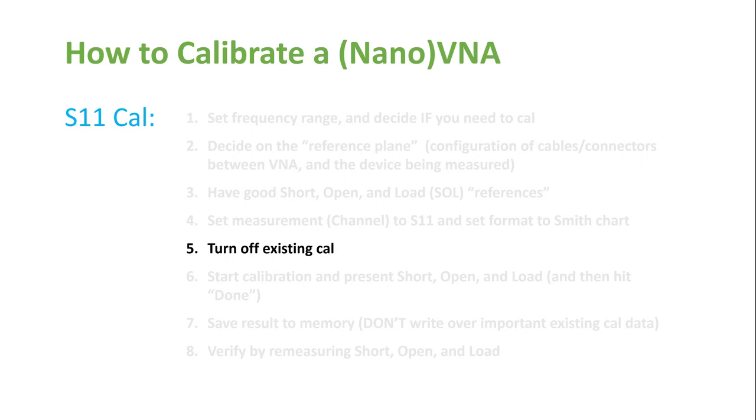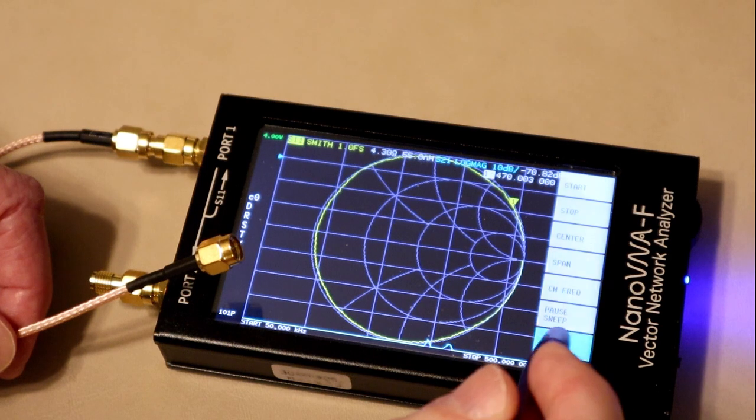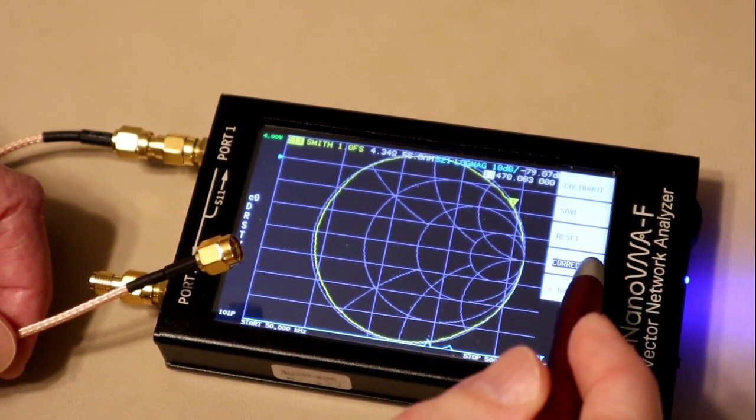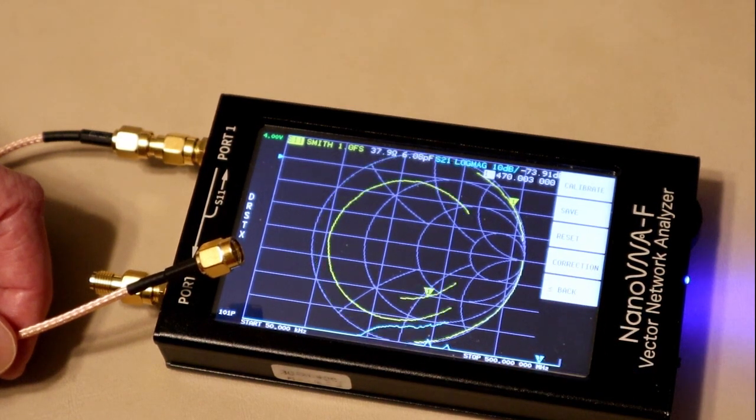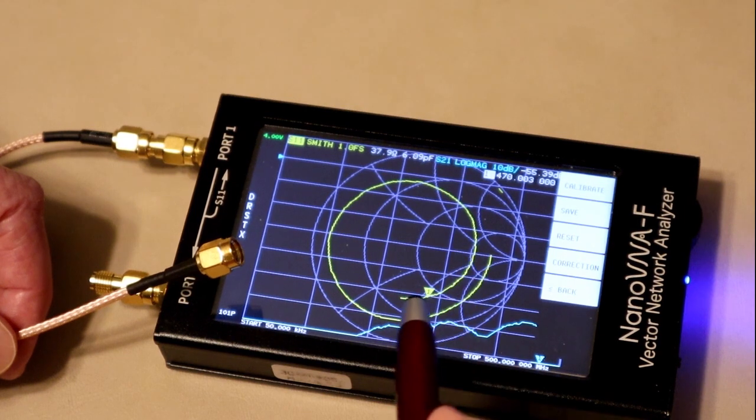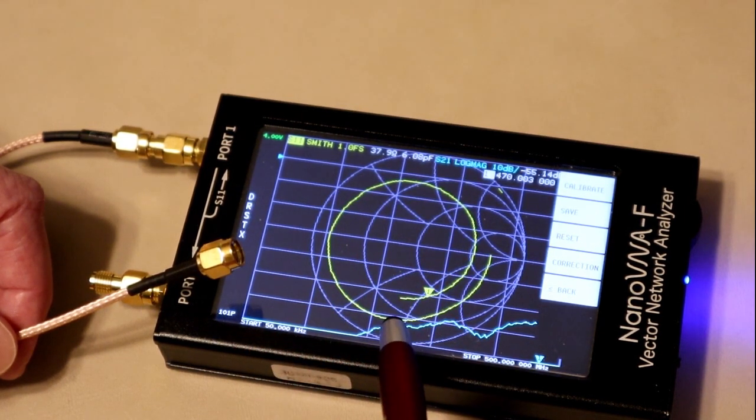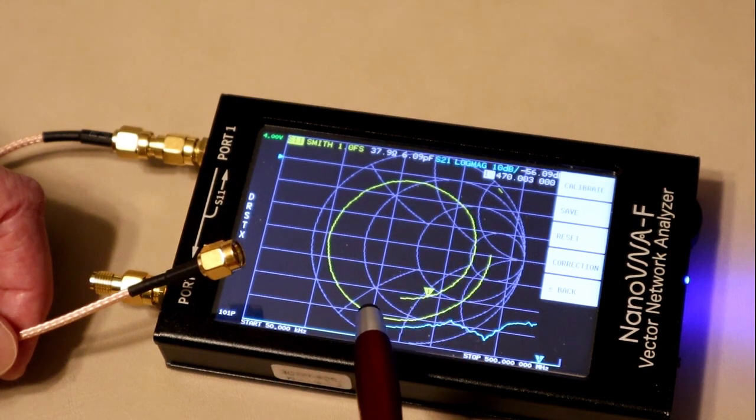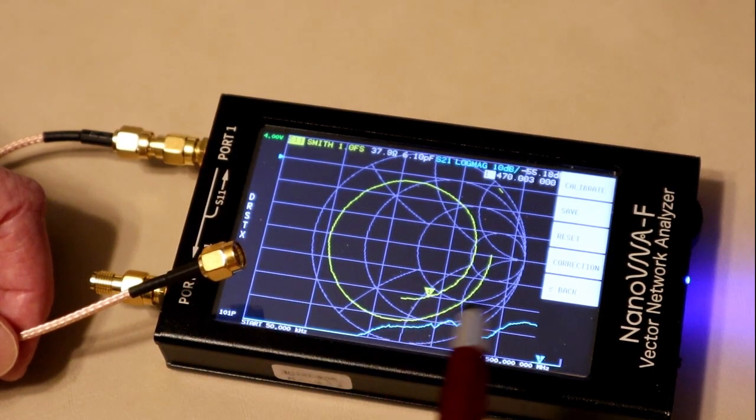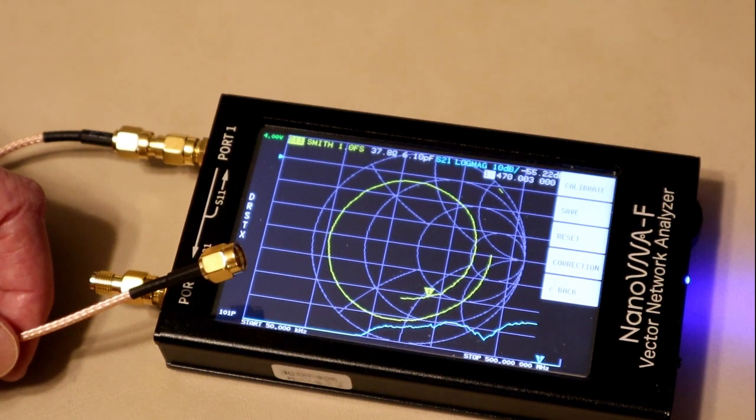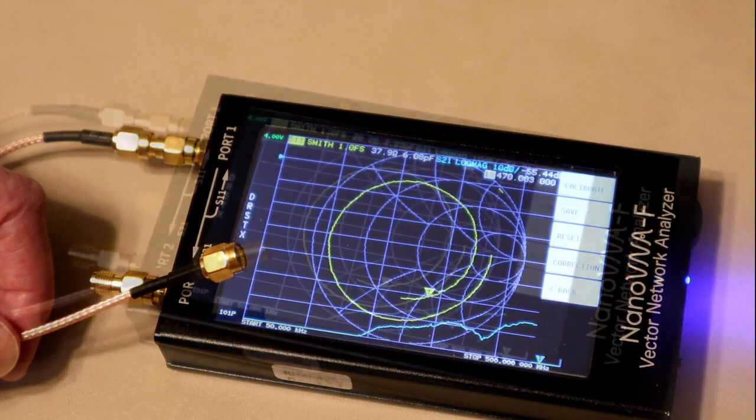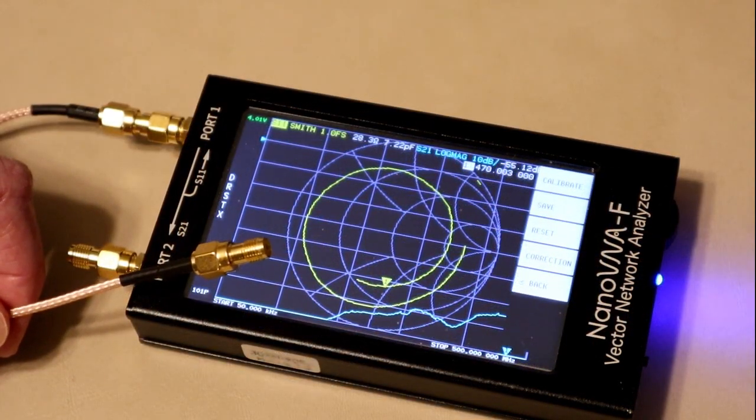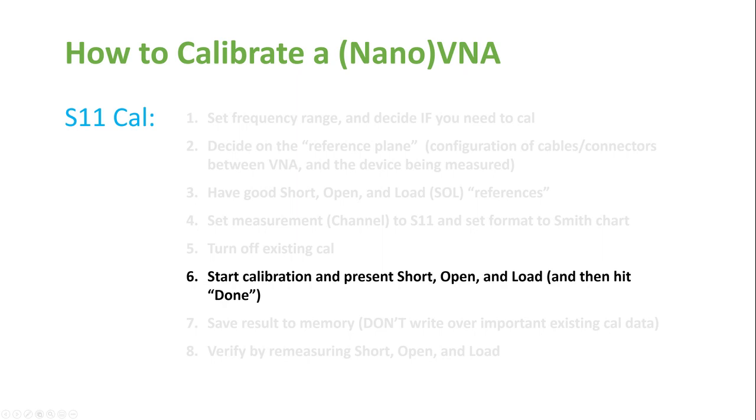I'm currently in log magnitude display, so again, I'm going to go to the menu, and I will select Format and Smith Chart. The next step is to turn off the existing calibration. So I will hit Back from the menu I was in, hit Cal, and I hit Correction to unhighlight it. Notice when I did that, that the S11 plot is now vastly different. This is due to the inaccuracies in the circuitry of the device itself. Remember when we talked about why you want to calibrate? One of the main things was the calibration fixes inaccuracies in the instrument itself. When I turn off the correction, those become blatantly obvious.